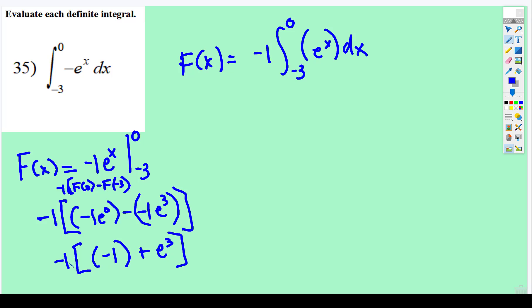Now this negative 1 multiplies across each of those. So negative 1 times negative 1 is 1, and negative 1 times e^3 is negative e^3.